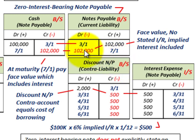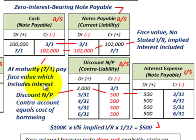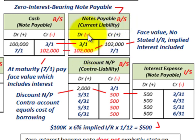On July 1st, when the note matures, you pay the face value which includes the interest. We debit notes payable for $102,000 to remove it from the books as a current liability, and credit cash for $102,000.